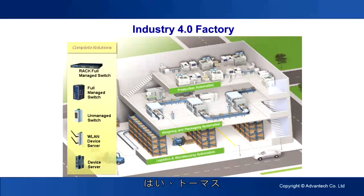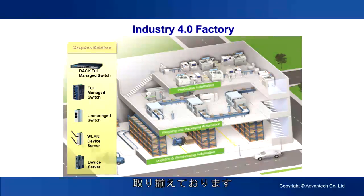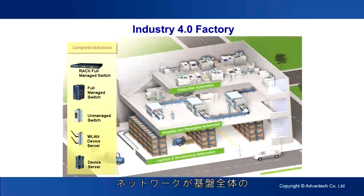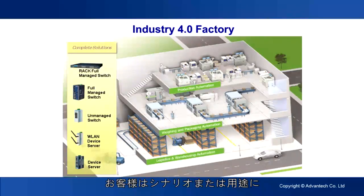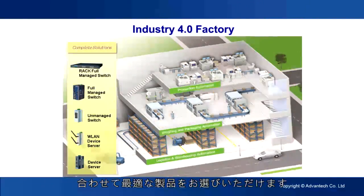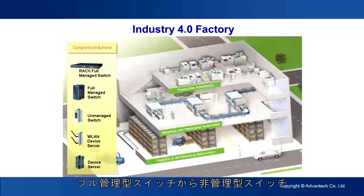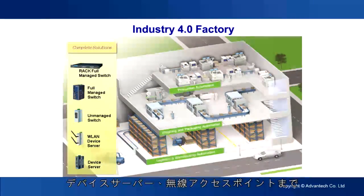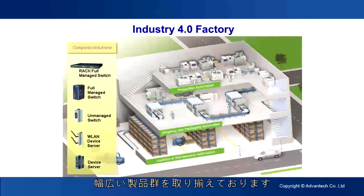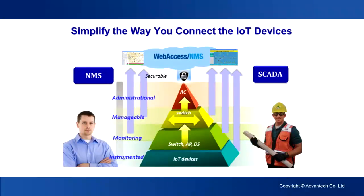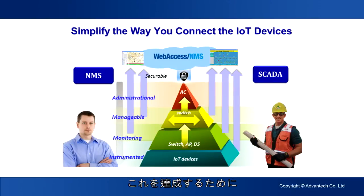Yes, as you can see, there is a great variety of products Advantech can offer for factories. As the last mile to complete the new generation factory, networking is the key to building up the whole infrastructure. Depending on the scenario or application, customers can choose suitable products ranging from fully managed switches to unmanaged switches, as well as device servers and wireless APs.